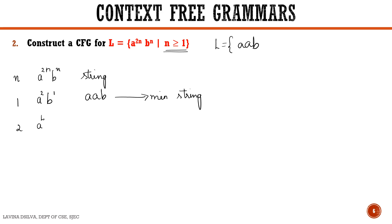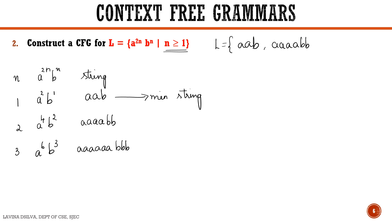When n is equal to 2, we get a raised to the power 4 b raised to power 2, so four a's followed by two b's. When n is equal to 3, it is a raised to power 6 b raised to power 3, so six a's followed by three b's. We can see the pattern: the a's occur in pairs and for every pair of a's we generate one b.